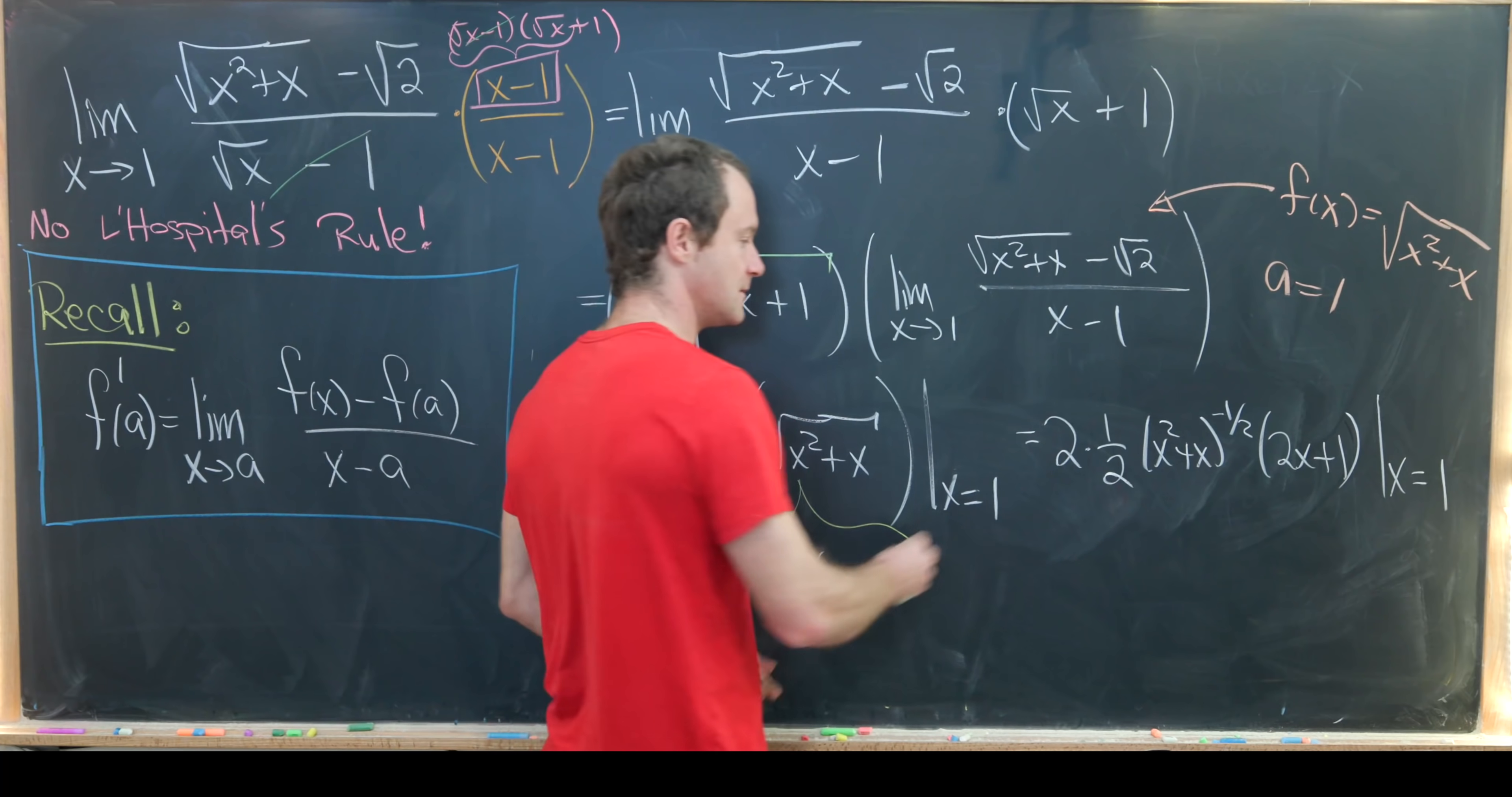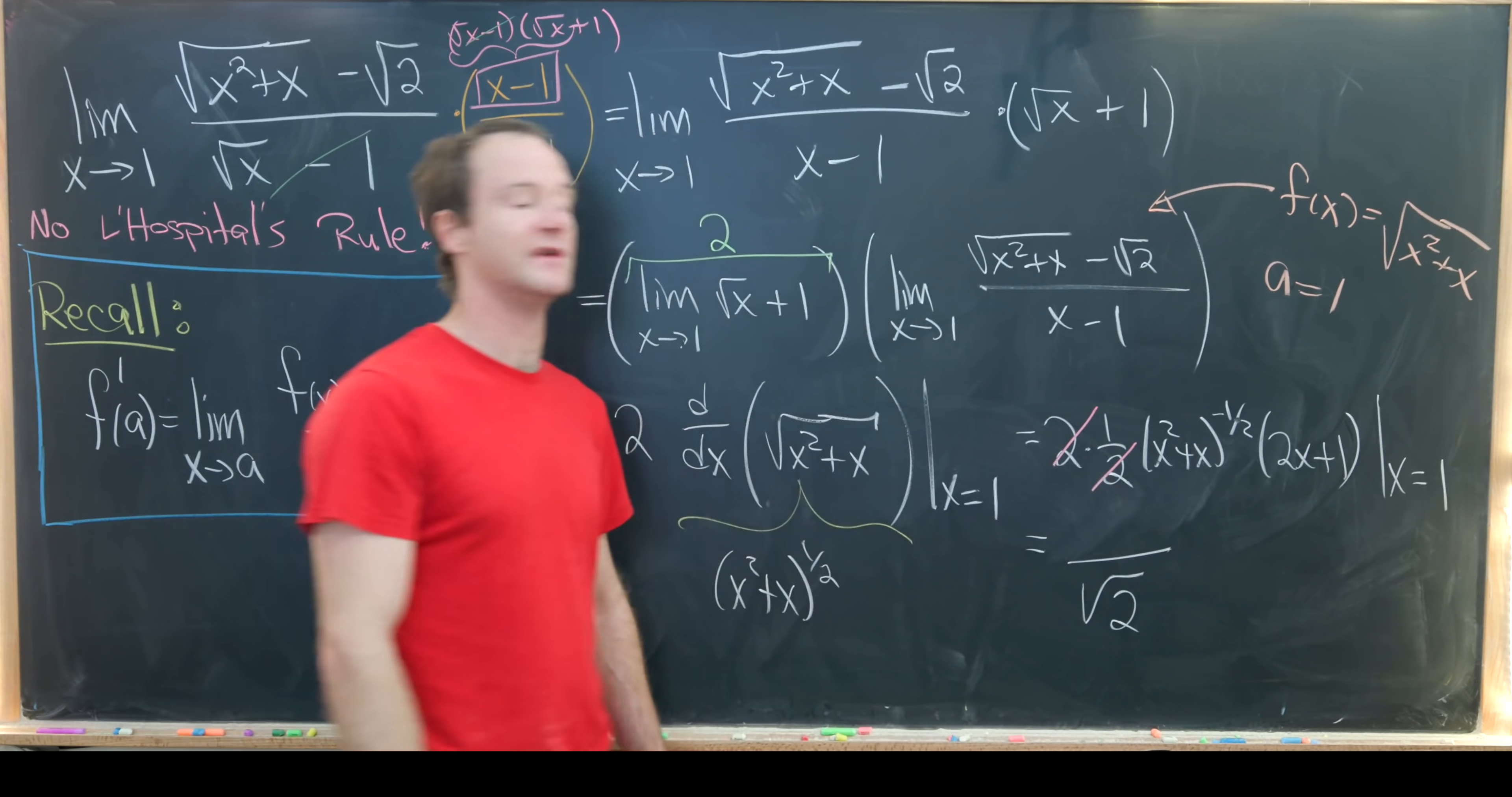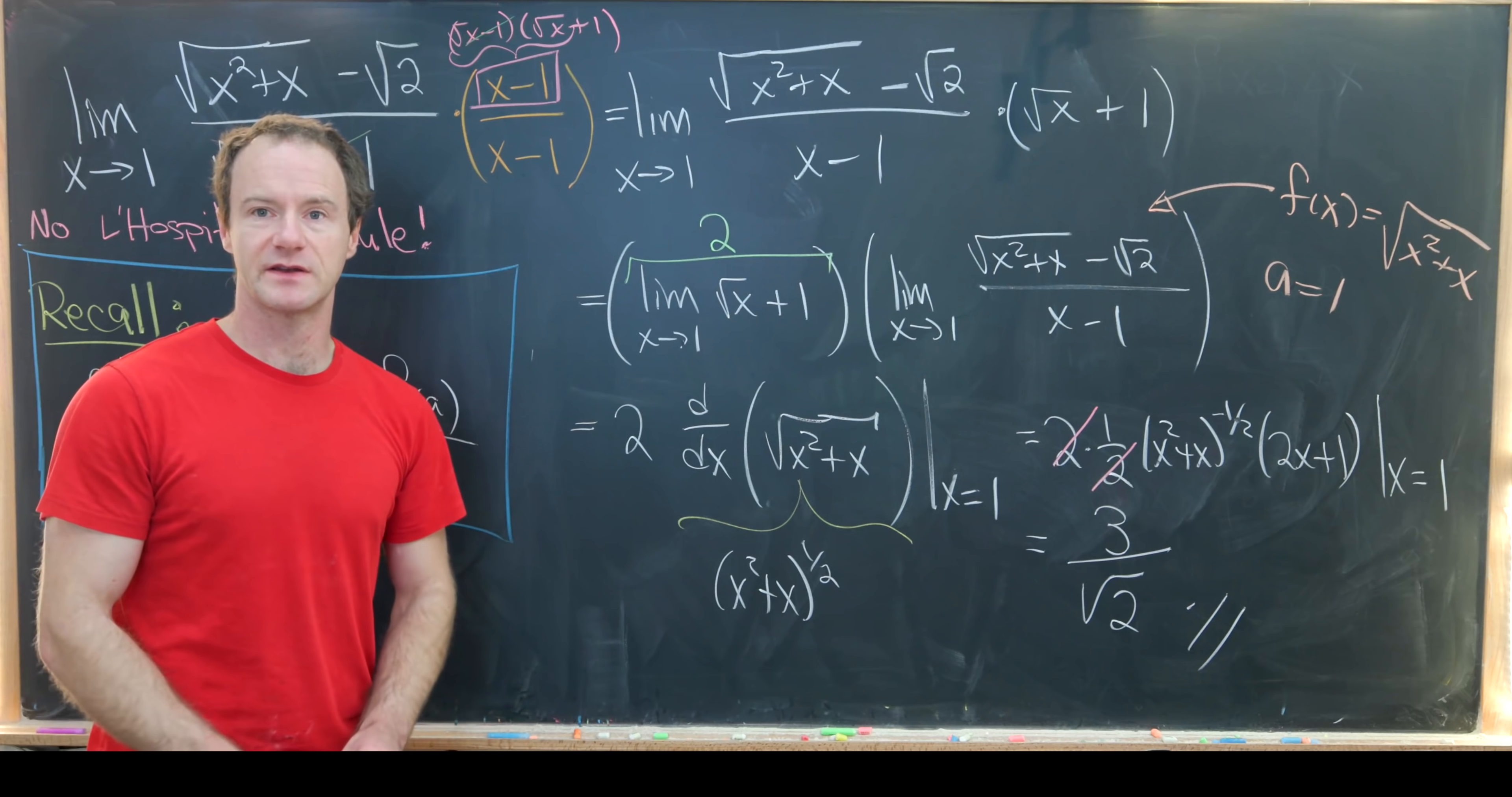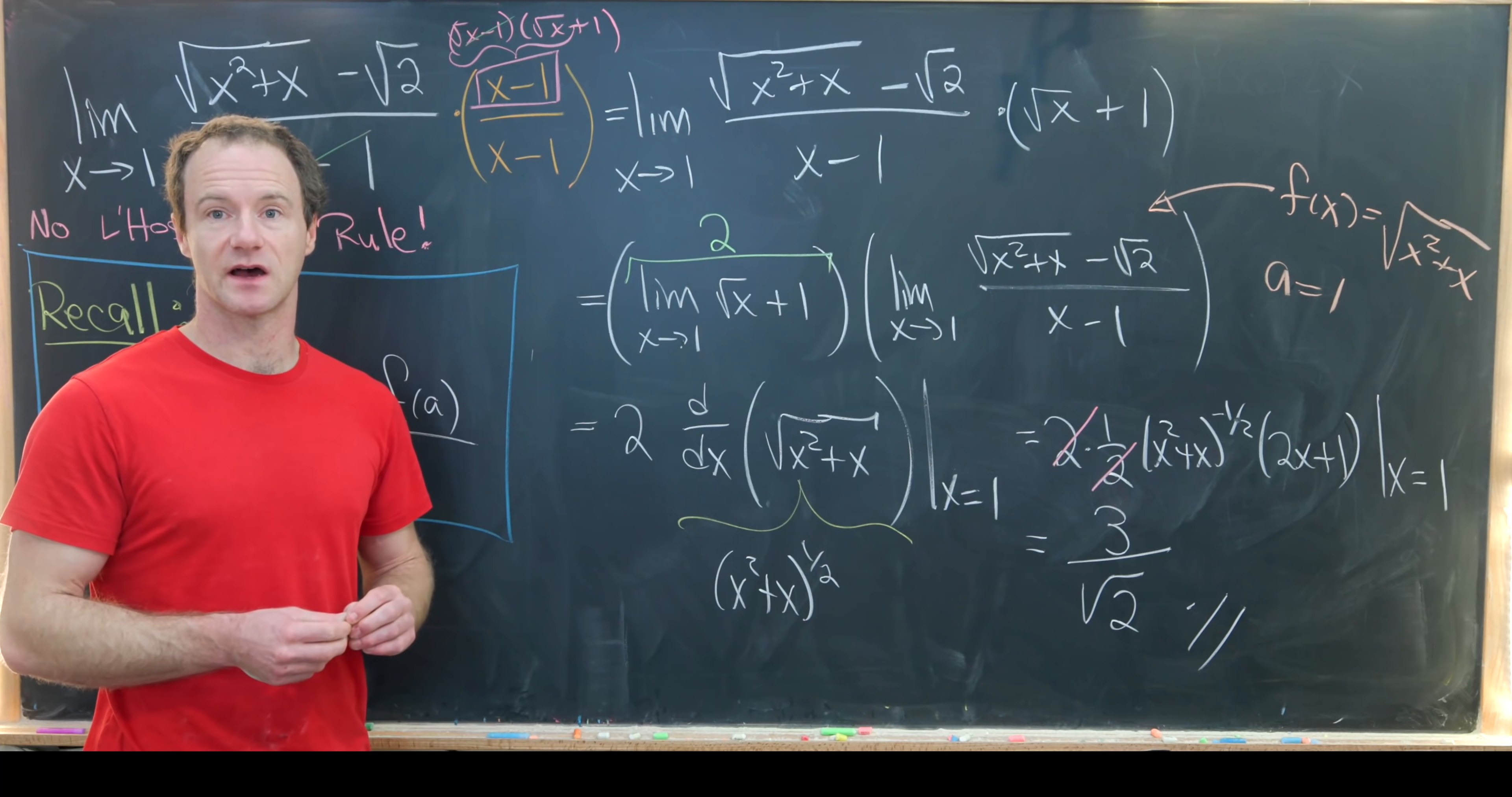So now let's simplify a bit. Notice this 2 can cancel with this 2. And then we're left with 1 plus 1 to the minus half. That's the same thing as having a square root of 2 in the denominator. And then 2 plus 1, which is 3, which we get in the numerator. And that's the final value for our limit. So maybe post in the comments if you've seen any other problems like this, which you can solve by going back to the root definition of some mathematical idea. And that's a good place to stop.